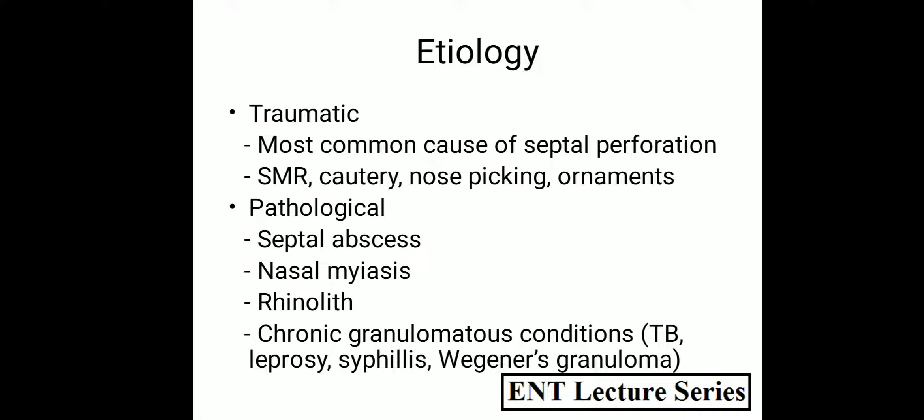There are some pathological conditions in which septal perforation is seen. Like septal abscess — in septal abscess, there is collection of pus below the mucoperichondrium layers, which leads to perforation. Then, maggots in the nose, that is nasal myiasis, destroy the cartilage and lead to septal perforation. Then rhinolith, which is caused by a neglected foreign body over which calcium and magnesium salts deposit, forming a stone-like substance that can cause septal perforation by pressure over the septum.